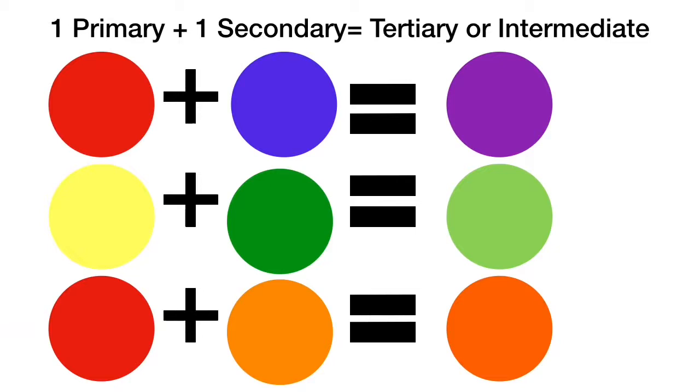Another color group you might not know about is when you mix one primary color plus one secondary color. You get either a tertiary or an intermediate color. For example, red plus violet equals red violet. Yellow plus green equals yellow green. Red plus orange equals red orange.